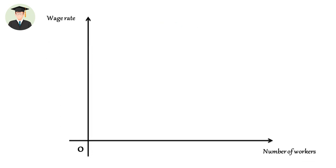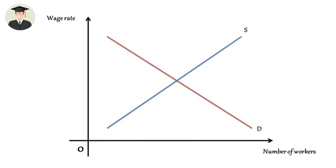The demand for labor curve shows a negative relationship between wage and number of workers. If there is a high wage rate, employers will reduce the number of workers in production, and if the wage rate is at a low level, they will increase the workers. On the supply side, laborers like to supply more labor if the wage rate is high, and they will reduce the supply of labor if they do not have enough wage rate. Wage will be determined according to the supply and demand of the factor market.